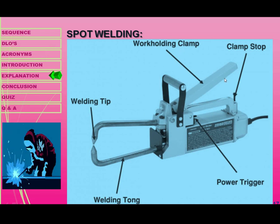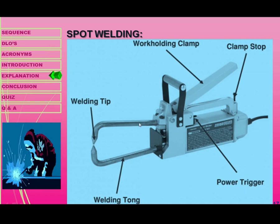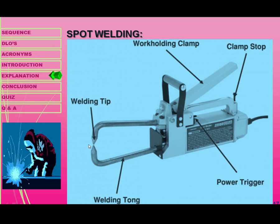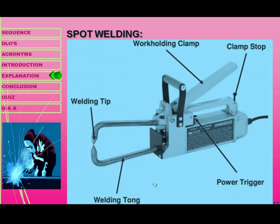In spot welding, a work-holding clamp, clamp stop, and power trigger are used to provide electric power for the joint. The welding tip is used to hold the metal sheet inside the welding tong, and the welding tip creates an electric arc so the thin metal sheet is joined to the second thin metal sheet. In seam welding, a continuous seam is created between the two sheets.